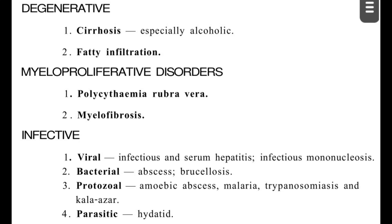In myeloproliferative disorders, the liver is also enlarged. In polycythemia vera, there is an abnormal increase in red blood cells, resulting in hepatomegaly as well as splenomegaly. Myelofibrosis is another condition in which the liver also gets enlarged.